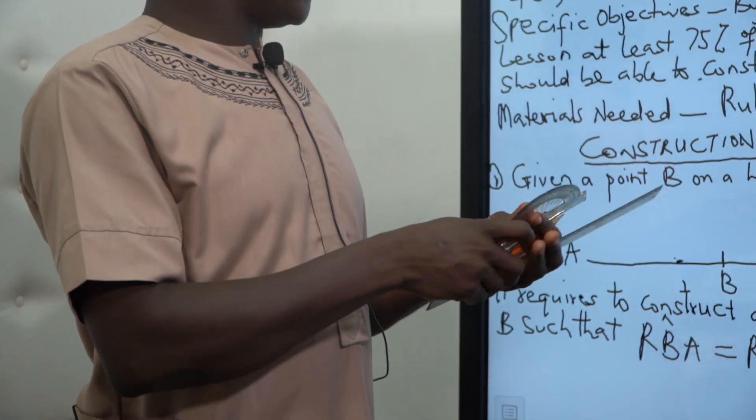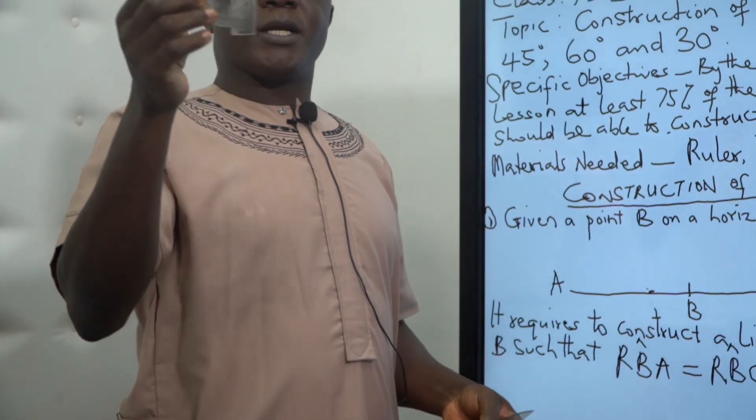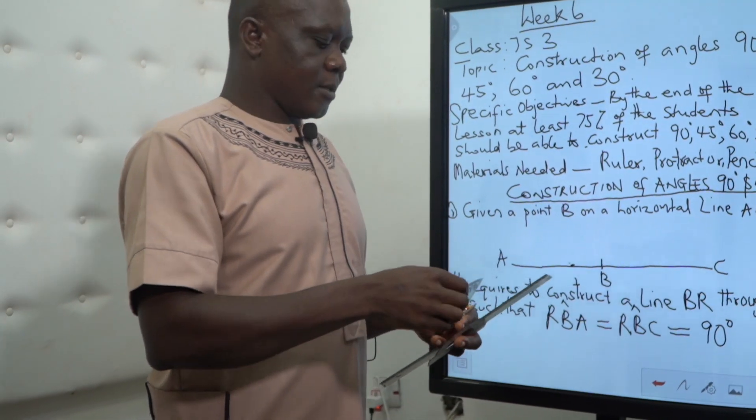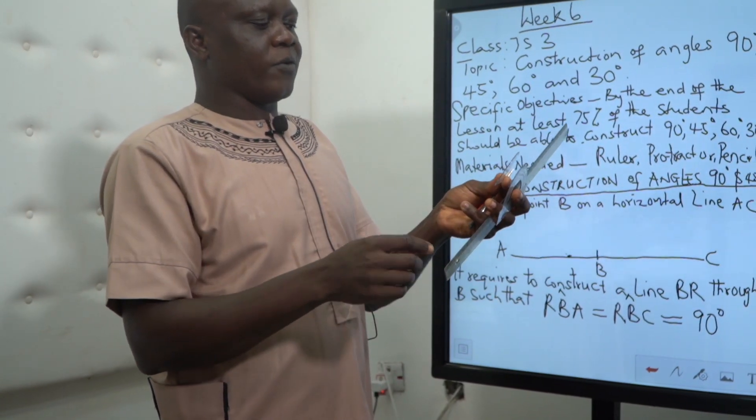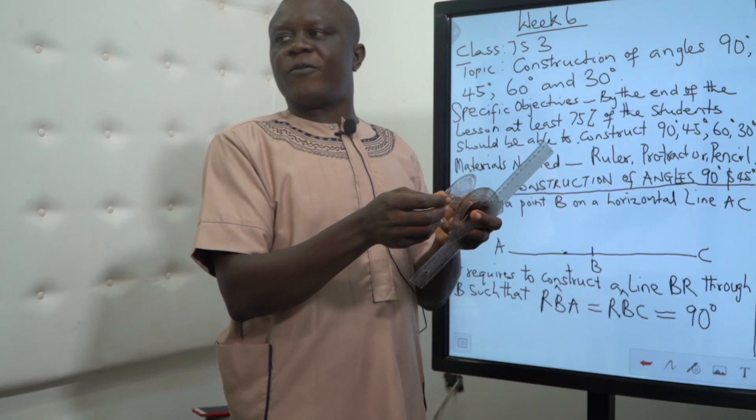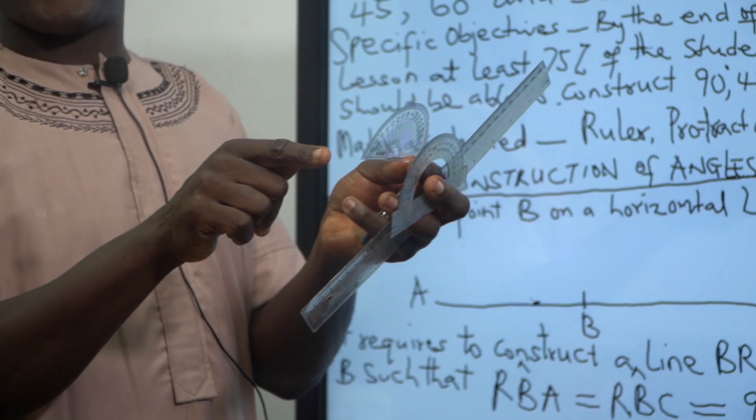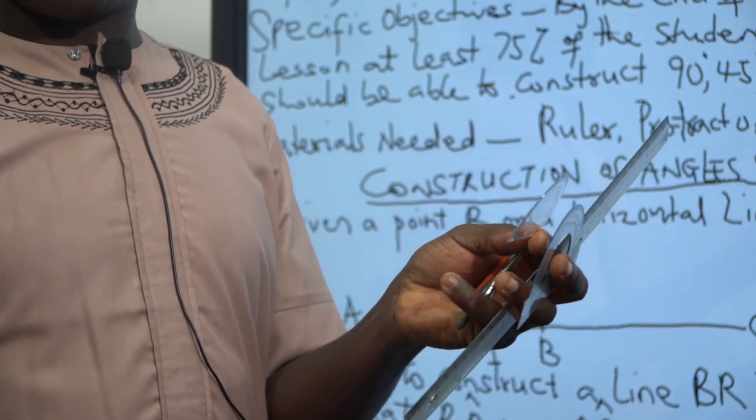Another one is a protractor. This is a protractor. This one is a protractor joint with a ruler. This one is another protractor. If you look at the protractor very well, you see that it is a half of a circle and it is calibrated from zero to 180 clockwise and also calibrated 0 to 180 anti-clockwise.